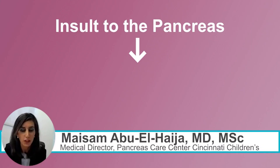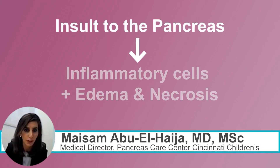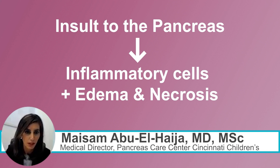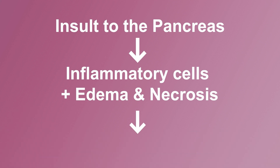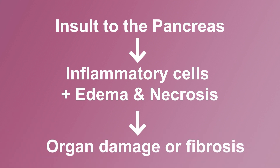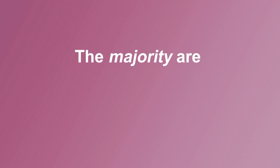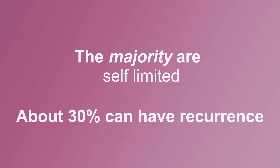Let's start from the beginning. What is acute pancreatitis? It is an insult to the pancreas that leads to the presence of acute inflammatory cells, edema and necrosis, that in some cases may result in organ damage or fibrosis. The majority of the cases are self-limited, but at about 30%, you could have recurrence.